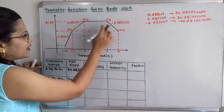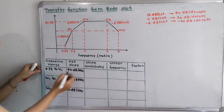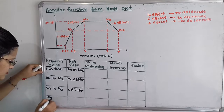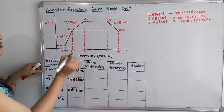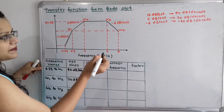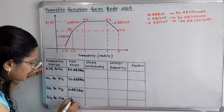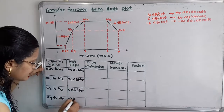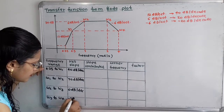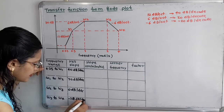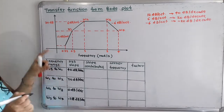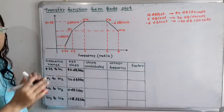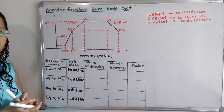Then omega 3 to omega 4: the slope is minus 6 dB per octave, so we write minus 20 dB per decade. These two columns are filled up with reference to the diagram.